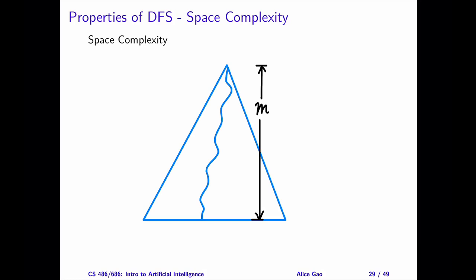If the current path does not lead to a goal, DFS must backtrack and try another path. To do this, DFS needs to remember the alternative nodes at every level. These alternative nodes are the siblings of the nodes on the current path.